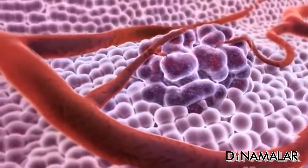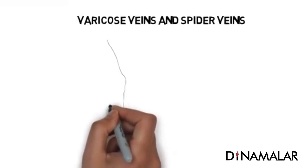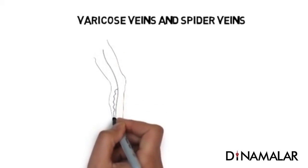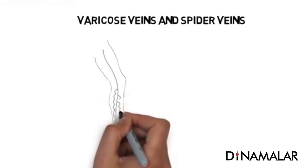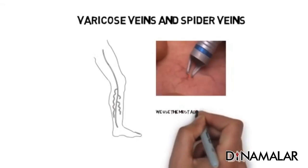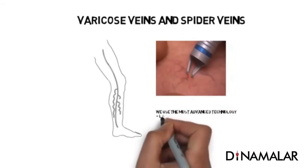The other thing is diabetes. Diabetic patients get ulcers. Peripheral angioplasty is one option for diabetic ulcers. The other thing is pain management — shoulder pain, knee pain, back pain — these can be treated through interventional radiology.